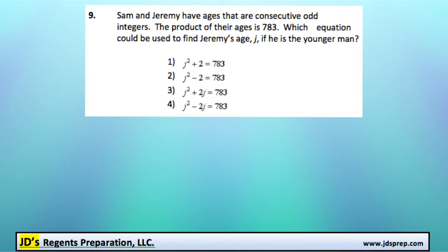This is problem number 9 from the August 2014 Algebra Regents exam. Sam and Jeremy have ages that are consecutive odd integers.